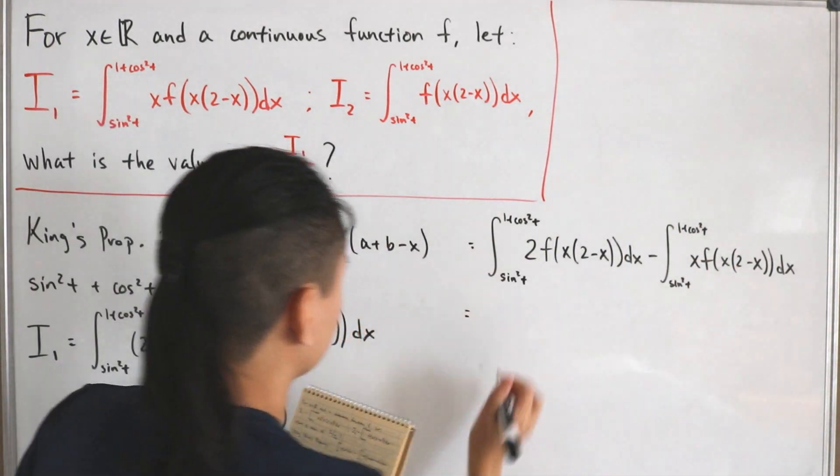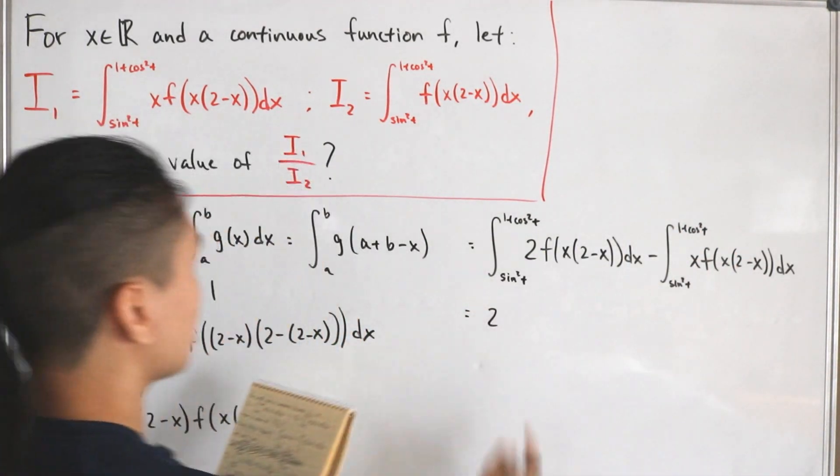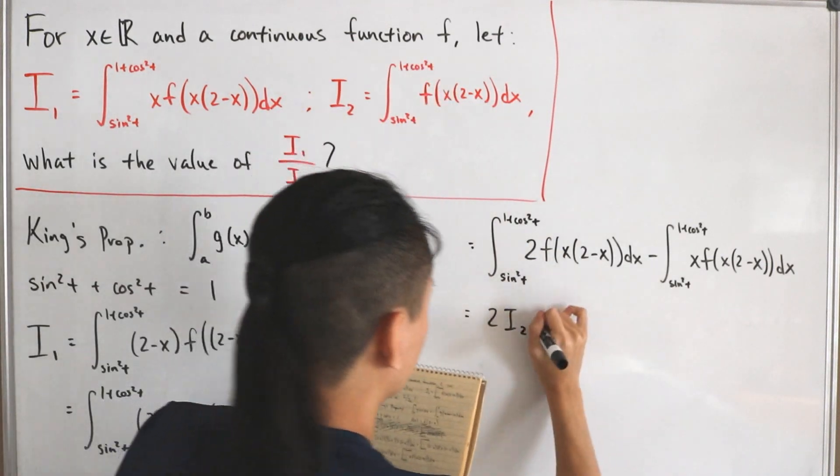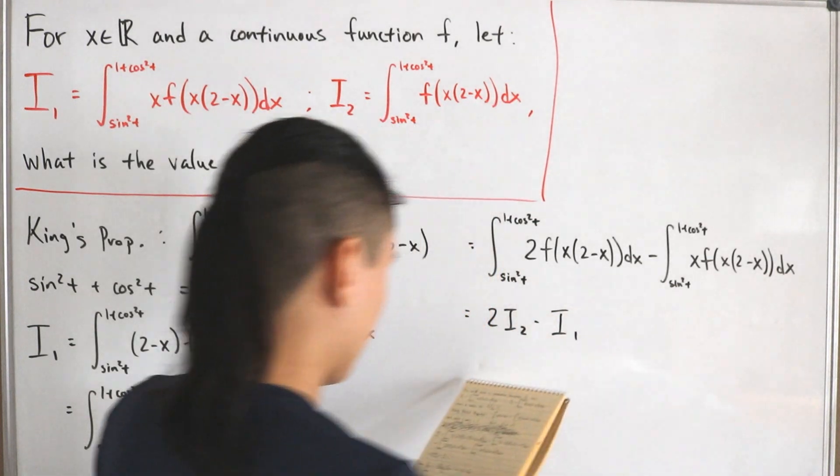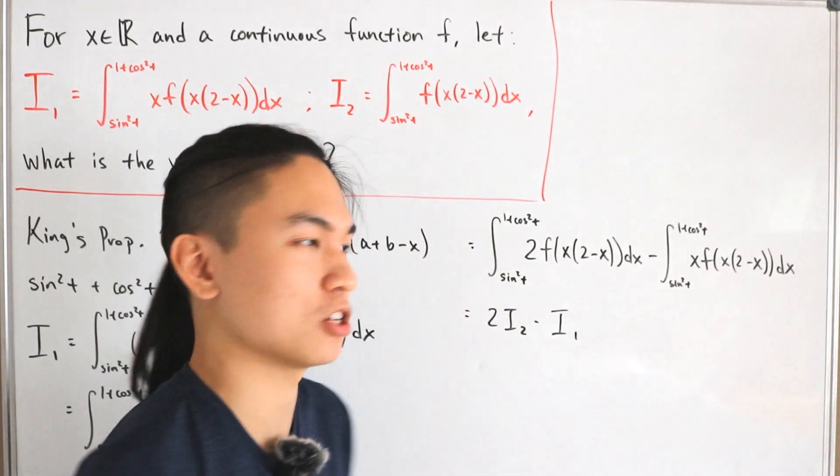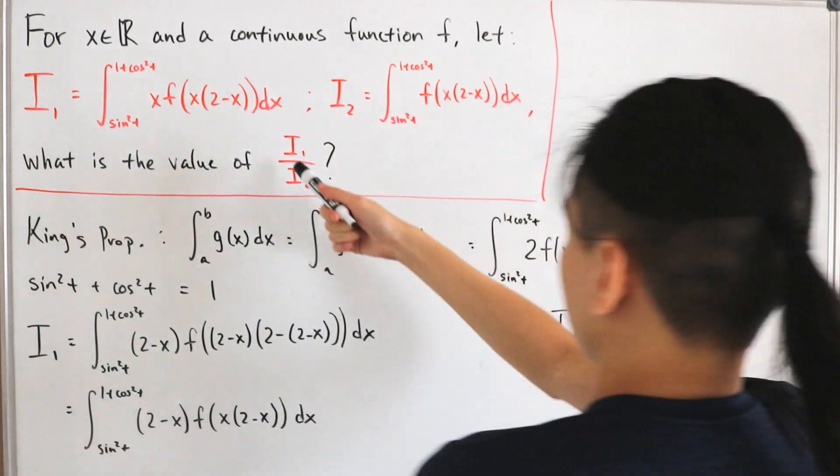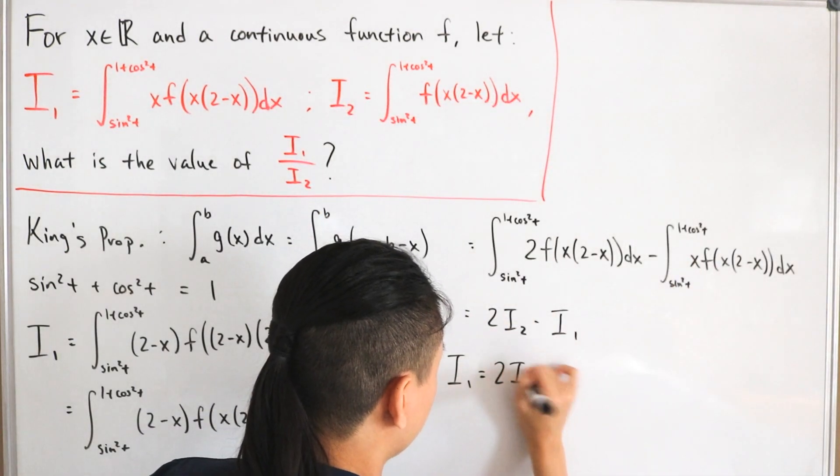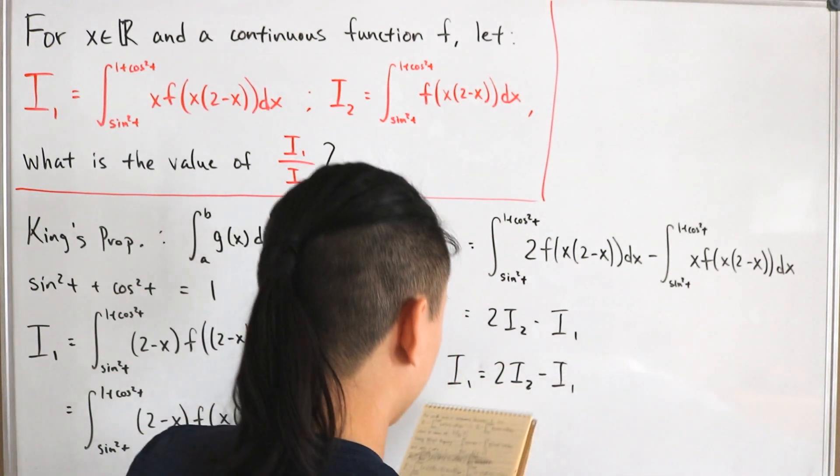Therefore this is equal to two times, as you notice this is twice i sub two, and then subtract i sub one. So again, this is very short and you can see how I can finish this problem off to solve what our given is just like that. To reiterate, i sub one is equal to two times i sub two minus i sub one.